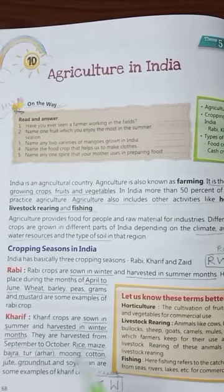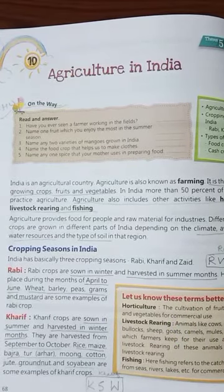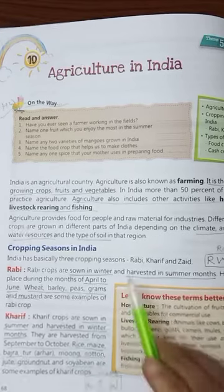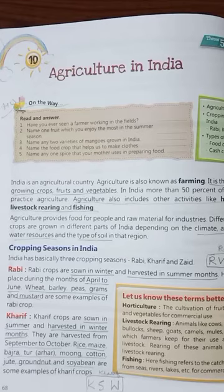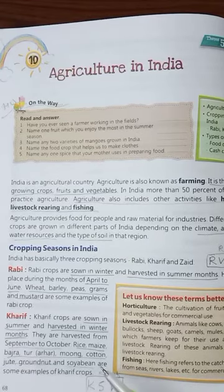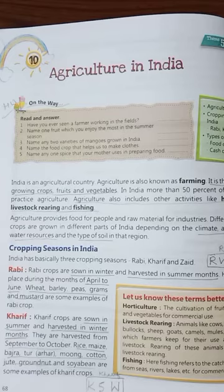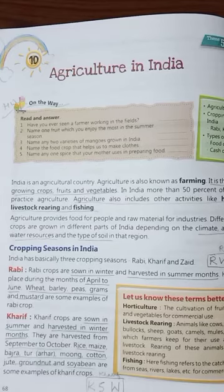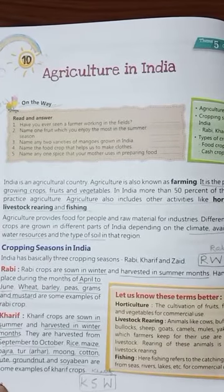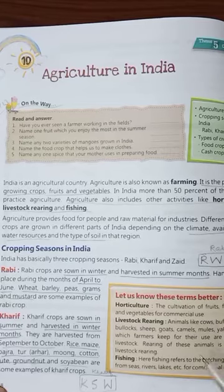Different crops are grown in different parts of India depending on the climate, availability of water resources and types of soil in that region. Like groundnut grows more in black soil, so it will grow more in regions where black soil is present. In northern regions wheat and sugarcane grow more because the soil there is suitable for those crops. It also depends on whether the climate is hot or cold.